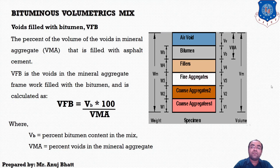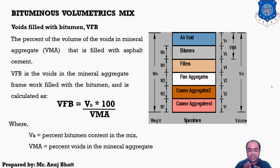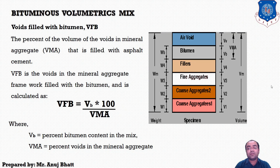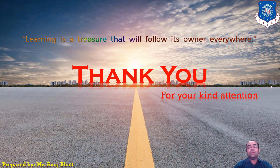After that, voids filled with bitumen (VFB) is the portion of the void in mineral aggregate that contains asphalt binder. This represents the volume of the effective asphalt content and can be described as the percentage of the volume of voids in mineral aggregate. VFB is inversely related to air voids — as air voids decrease, VFB increases. VFB is calculated as: vv / VMA × 100. A schematic diagram showing air voids, bitumen, VMA, and VFB is referenced in this figure. With this, I am concluding today's lecture. Thank you so much, students, for your kind attention. We will see you in the next lecture.